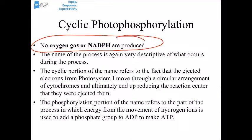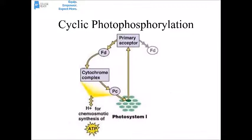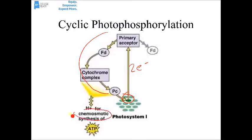The name is descriptive: the cyclic portion refers to the fact that ejected electrons move in a circle — they leave PS1, go through an ETC (cytochrome proteins), and come back to the reaction center they left. The phosphorylation portion refers to the energy from hydrogen ion movement being used to add a phosphate group to ADP to make ATP. Here we can see that: the reaction center in PS1 absorbs light energy, loses a pair of electrons, those move through the ETC, and eventually come back — but in the meantime their energy pumps H+ ions to build up a gradient that drives chemiosmosis and ATP creation.